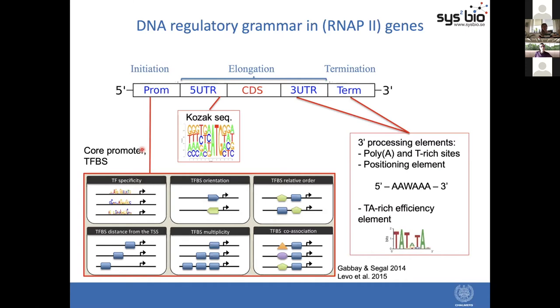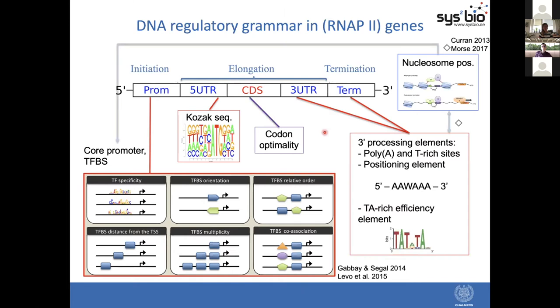These regions carry a lot of regulatory signals — DNA sequence motifs — for instance, transcription factor binding sites in promoters, Kozak sequences in five-prime untranslated regions, as well as three-prime processing elements related to termination of transcription. On top of this, we have codon usage and codon optimality, different codon usage across genes, as well as the nucleosome positioning code, which is important across all regions as it defines the accessibility of DNA for enzymatic processing, especially the RNA polymerase. There is a rich regulatory grammar that we need to model in order to predict expression levels merely from the DNA sequence.